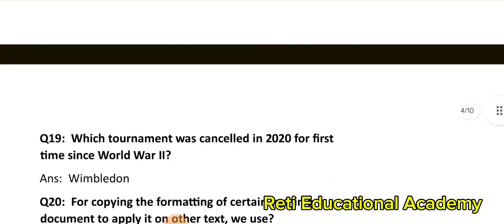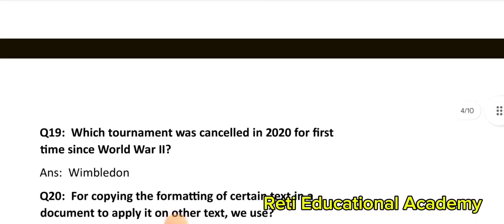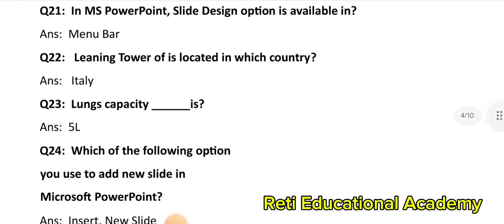Question number 20: For copying the formatting of certain text in a document to apply on other text, we use Format Painter. Question number 21: In MS PowerPoint, the Slide Design option is available in: Menu bar. Question number 22: The Leaning Tower is located in which country? Italy. Question number 23: Lung capacity is 5 litres. Question number 24: Which option do you use to add a new slide in Microsoft PowerPoint? The answer is: Insert New Slide.